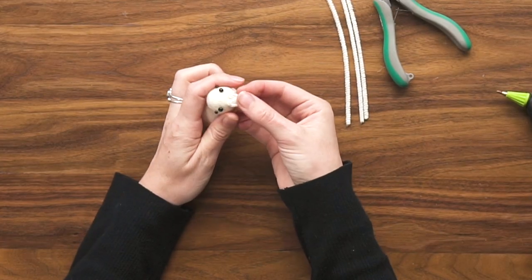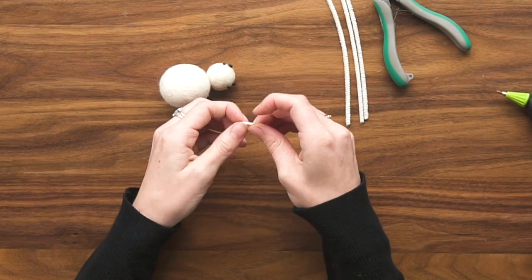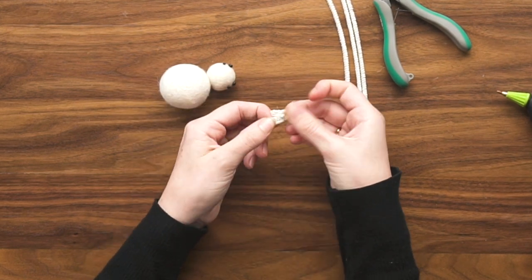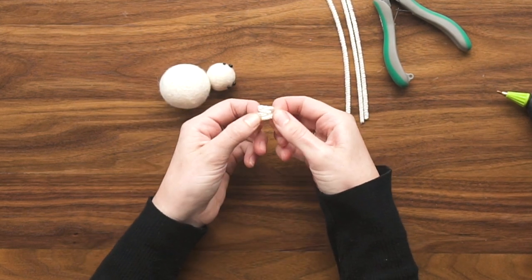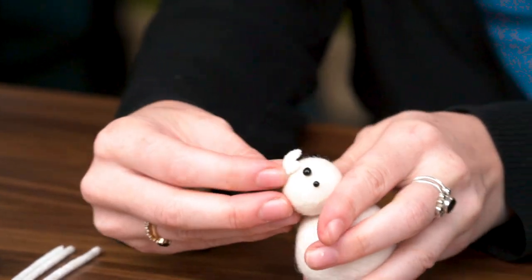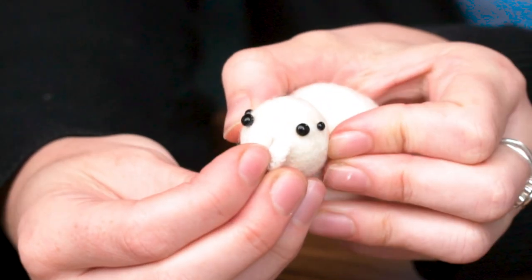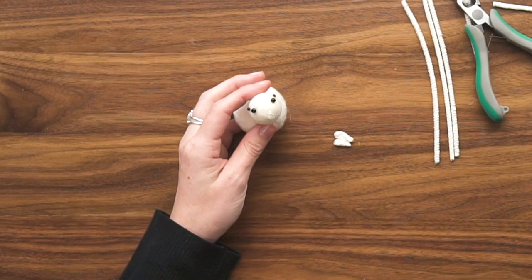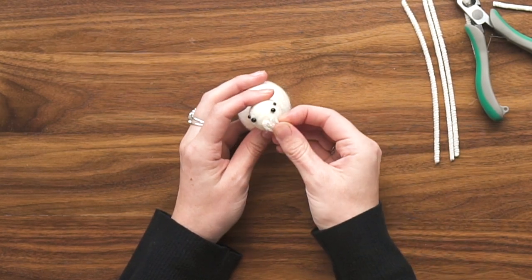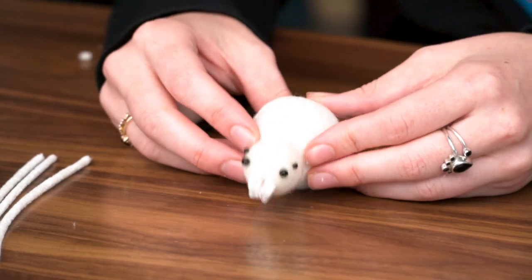To get this to sit nicely on his face, I just want to give it a little bit of a bend, so I'm going to bend it so it's slightly rounded. Then we'll attach that right there in between those eyes. It kind of looks like a little mustache. Hot glue will do the trick. What do you think, looking spooky yet?